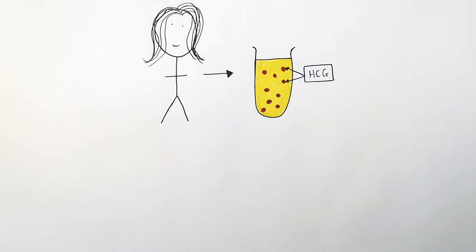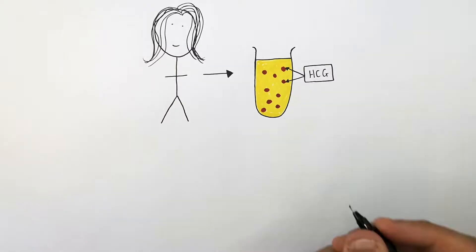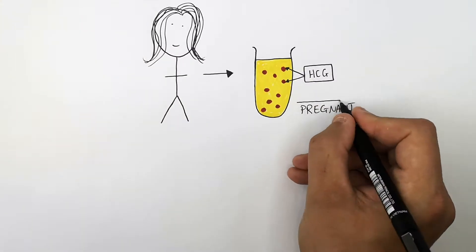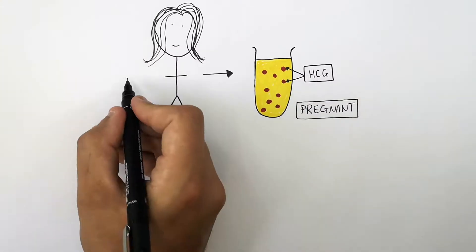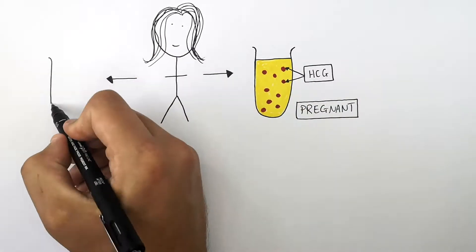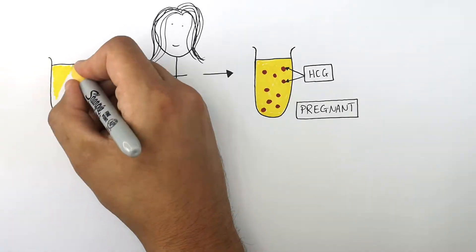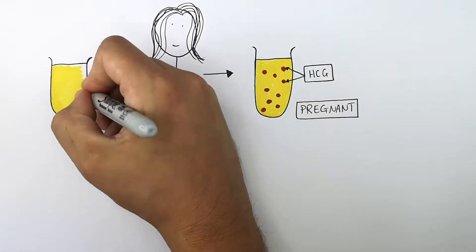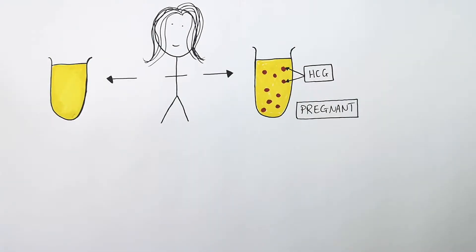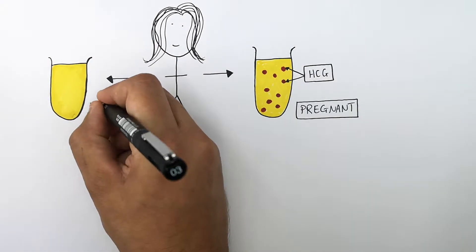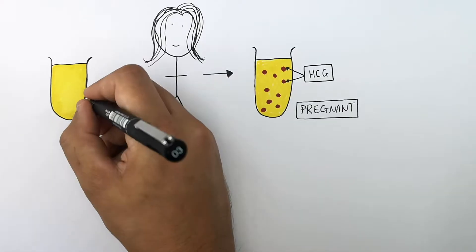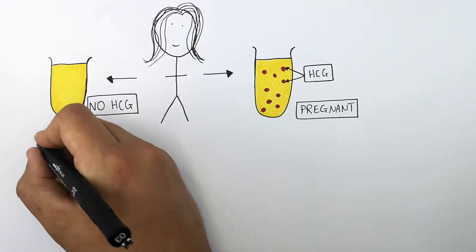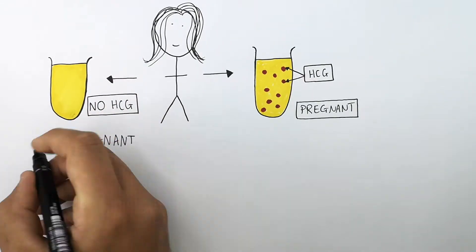HCG is a hormone only found in a female's body when they're pregnant. And if she's not pregnant, her urine will contain no HCG. So this is her urine sample with no HCG in it — she's not pregnant.